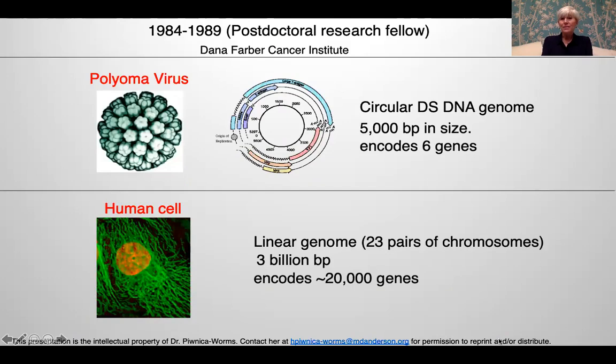Back in the day, if one was interested in studying cancer, one of the great ways to do this was to use either DNA or RNA tumor viruses as your model system, because they are small. In my case, I studied the transformation of polyomavirus, which has a circular double-strand DNA genome of only 5,000 base pairs and encodes six genes, and the oncogene middle-T antigen was known.